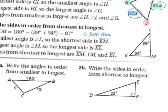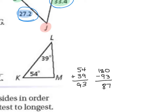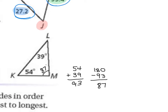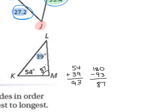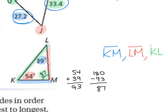Example B says to write the sides in order from shortest to longest. This triangle has two of three angle measurements given — 54 and 39 degrees. Adding those gives 93, and 180 minus 93 gives 87 degrees for the third angle. Shortest side is opposite the smallest angle of 39, which is side KM. Next is side LM, opposite the 54-degree angle. The largest side is KL, opposite the 87-degree angle.